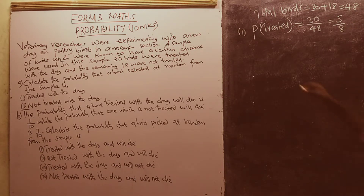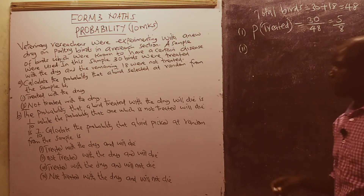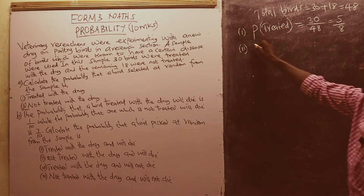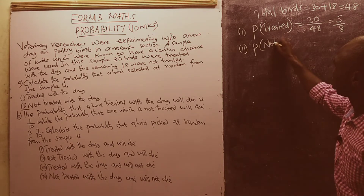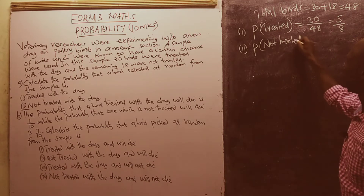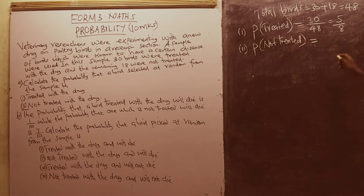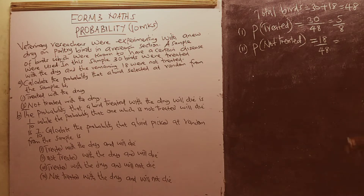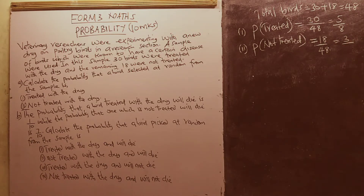For Roman numeral 2 of Part A, we calculate the probability that the bird was not treated with the drug. We take the number of birds not treated, which is 18, over the total number of birds, 48. Taking the common factor of 6, 6 goes into 18 three times and into 48 eight times, giving us 3 over 8.